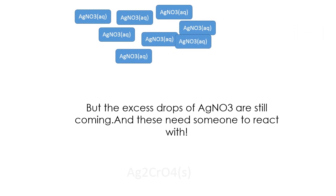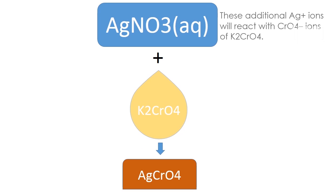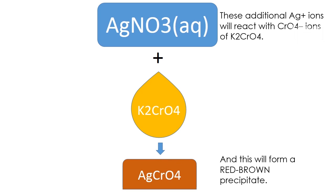So what happens next? The AgNO3 molecules keep coming inside the flask from the burette and these need someone to react with. These will react with the chromate ions now and will frequently form silver chromate which is a red-brown precipitate.